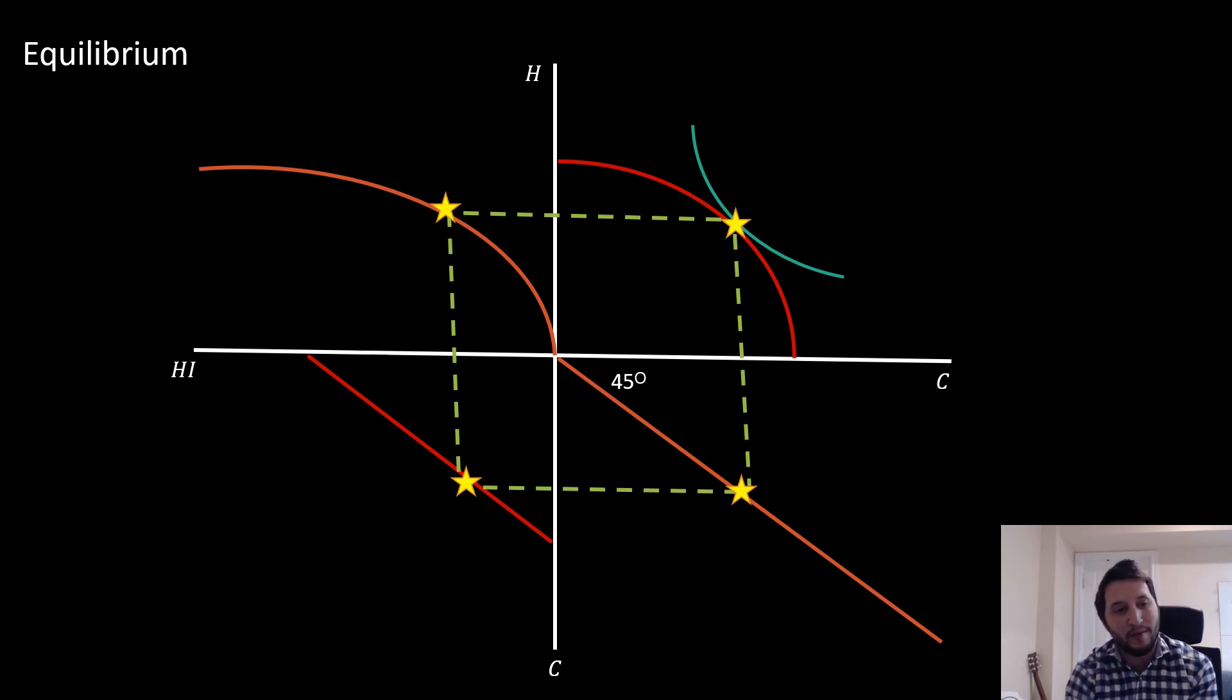We can also think about capacity in the context of this model, where we have our capacity limits indicated by this orange line, which shows how much of this health status we can produce at its maximum and how much of this consumption good we can produce.